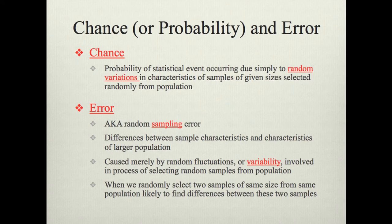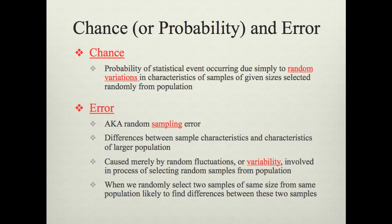Chance or probability of error: there is a chance probability that an event will occur simply due to random variations in the characteristics of a sample of a given size that is selected randomly from a population. When making inferences from a sample to a population, there is always some possibility that the selected sample does not accurately represent the population — one of the biggest culprits being sample size. Error in this context is random sampling error, resulting from differences between the characteristics of a sample and the characteristics of a much larger population.